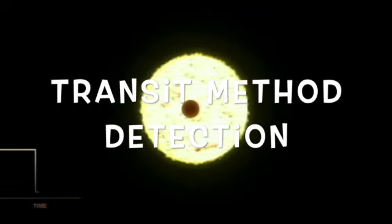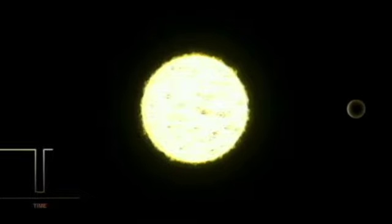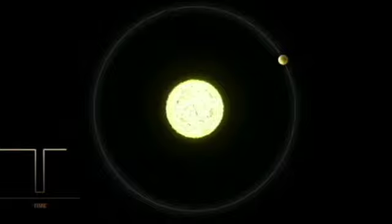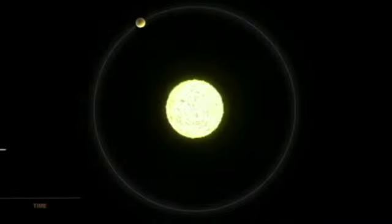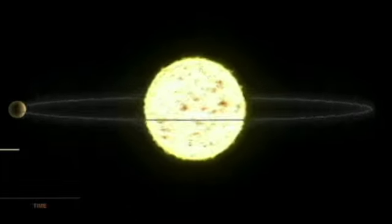A third method is called transit method detection. When observing the light intensity of a star over a period of time, occasionally a dip is visible, which signifies an object moving in front of it. If the dip is of constant intensity and at regular intervals, then it is likely to be an exoplanet in orbit around the star.